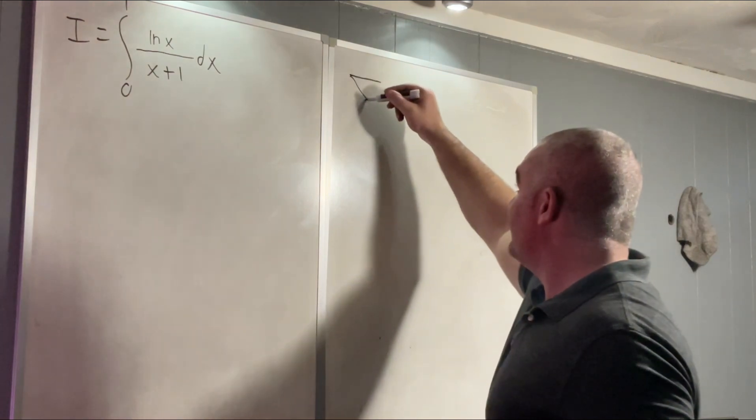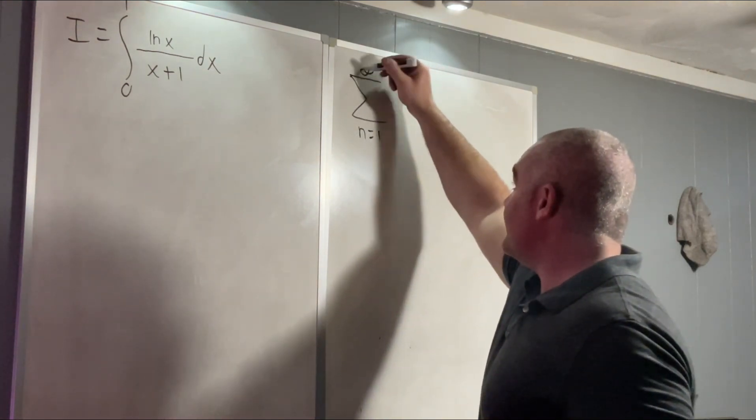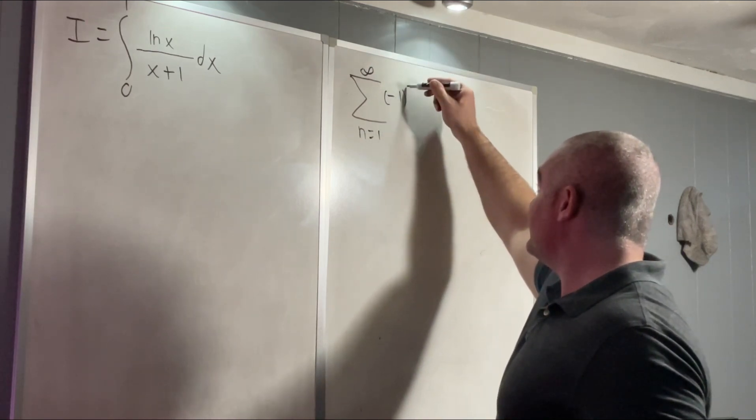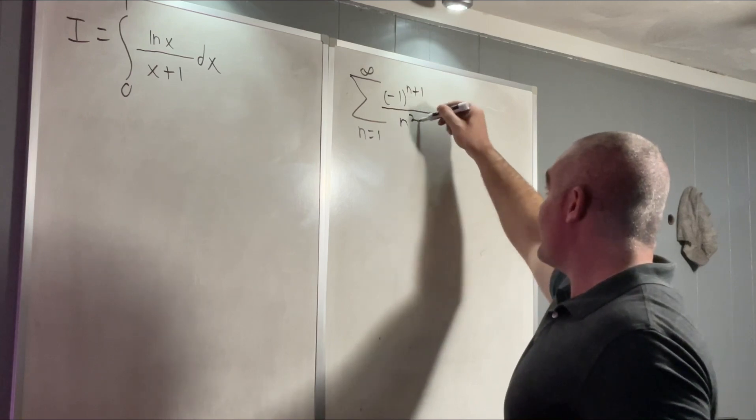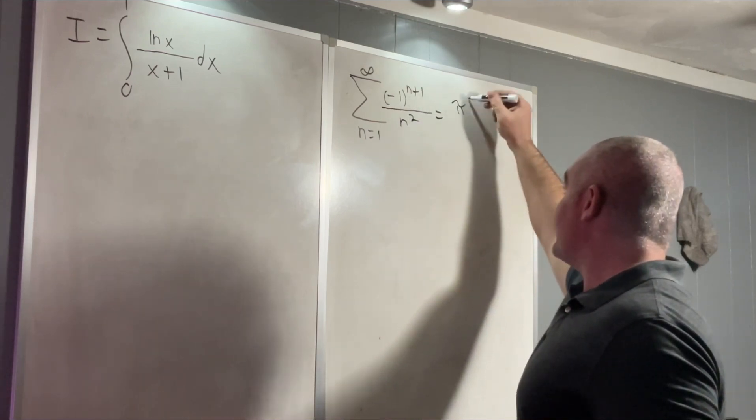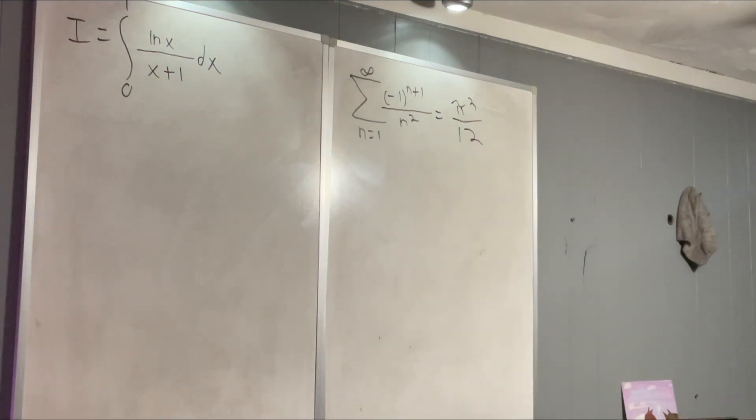The sum from n equals 1 to infinity of negative 1 to the n plus 1 over n squared is equal to pi squared over 12. And we found that result in the previous video.